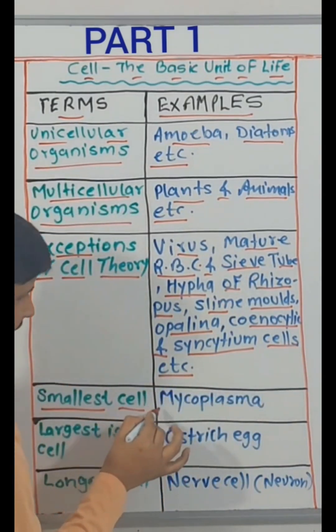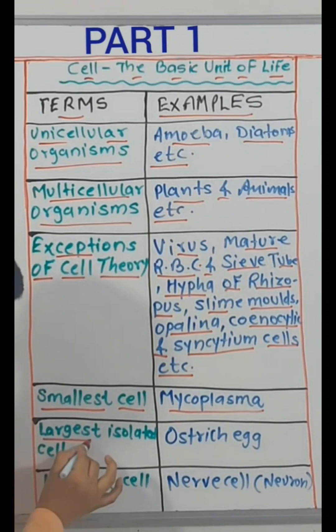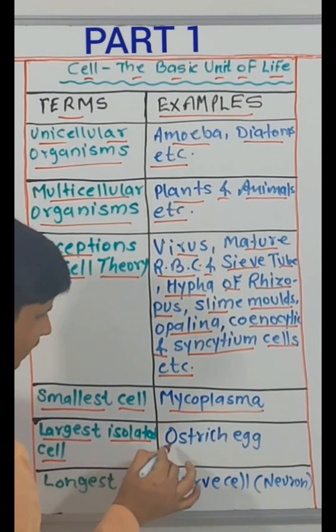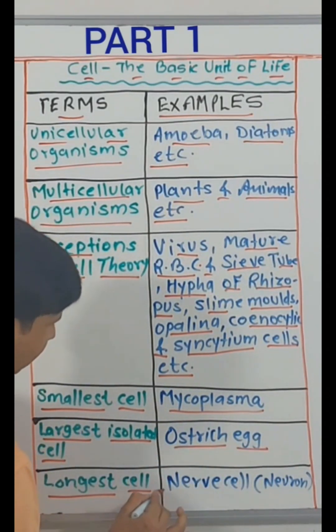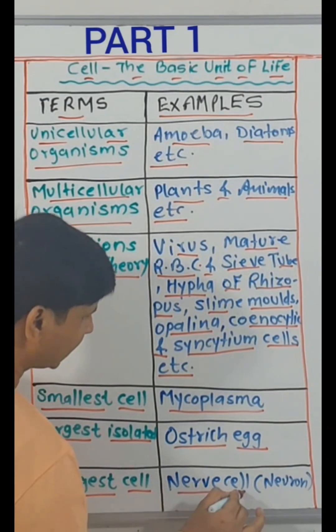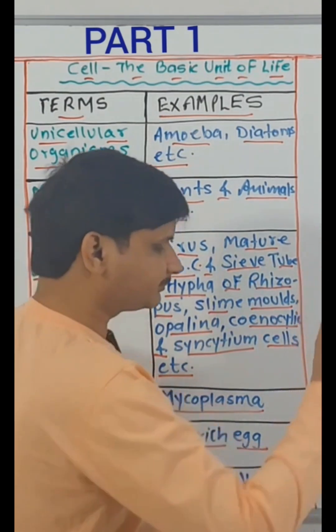Smallest cell: Mycoplasma. Largest isolated cell: ostrich egg. Longest cell: nerve cell, that is neuron.